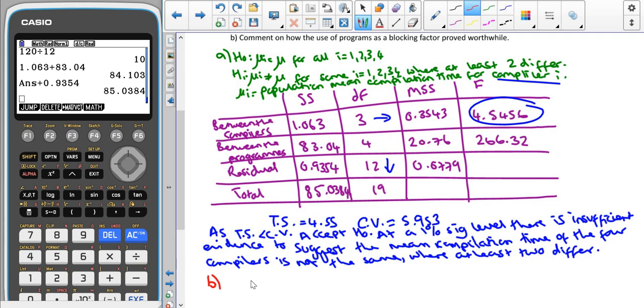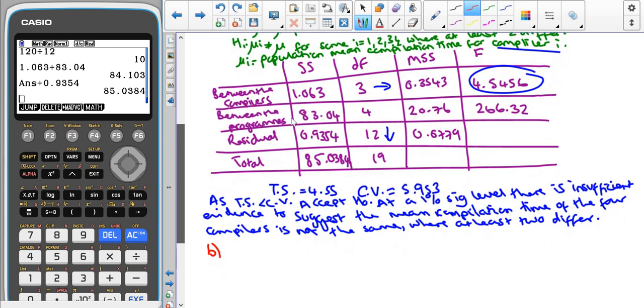For part b, we're asked to comment on how the use of programs as a blocking factor proved worthwhile. Well, if we were doing the hypothesis test involving the programs instead of the compilers, then our test statistic would have been 266. Our critical value would have been when we go across by 4 and down by 12, which would give us 5.412. That means as the test statistic would have been bigger than the critical value, we would have ended up rejecting H₀.